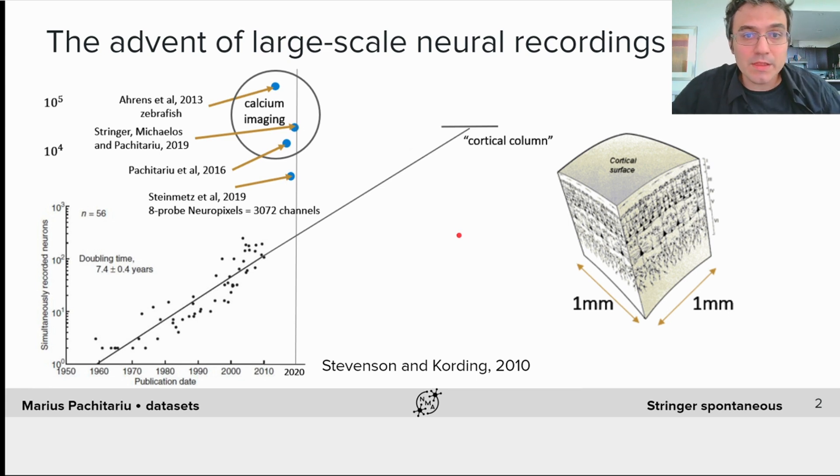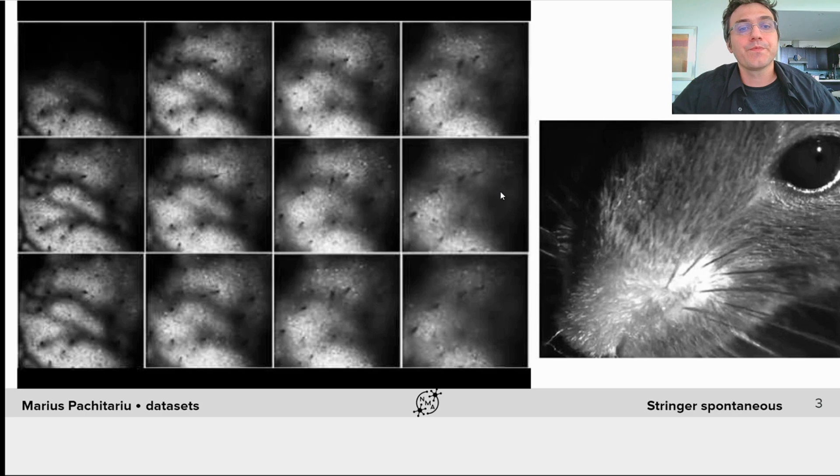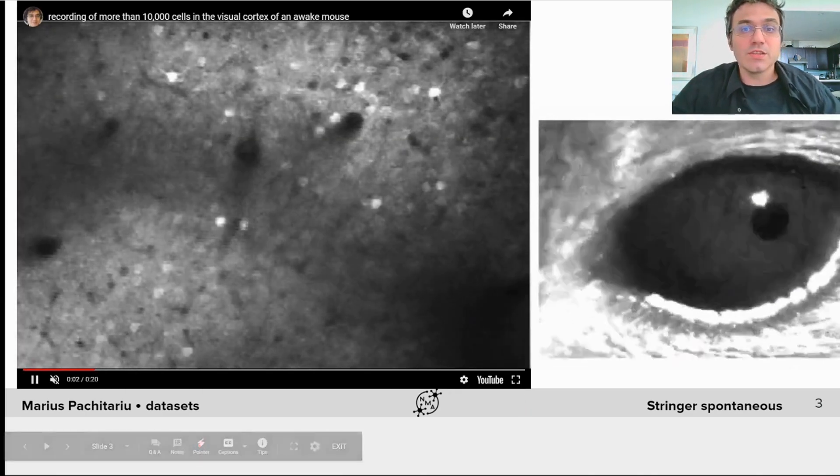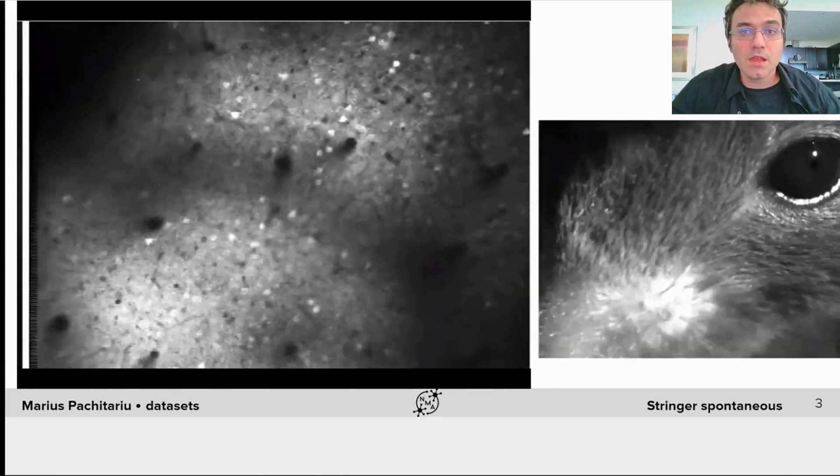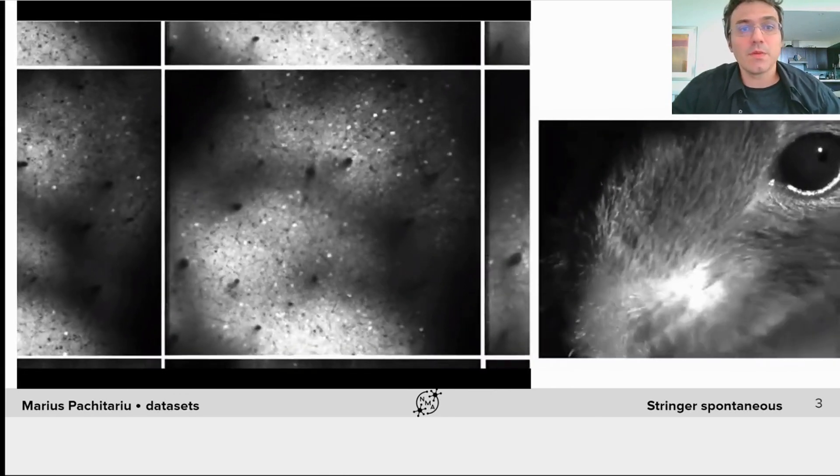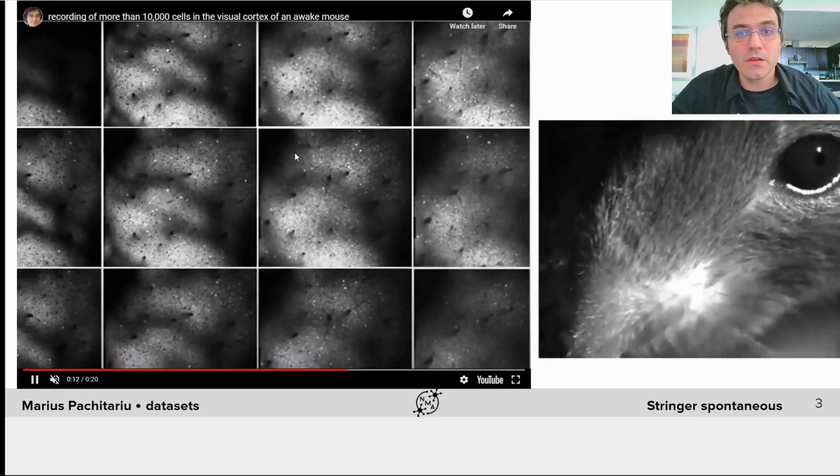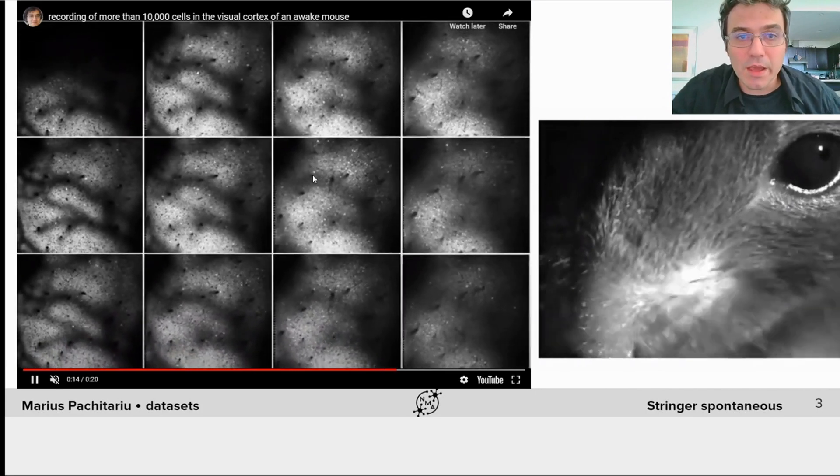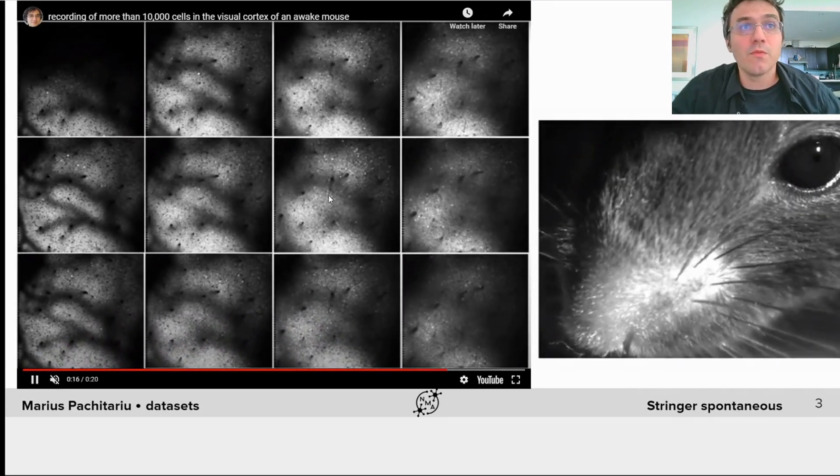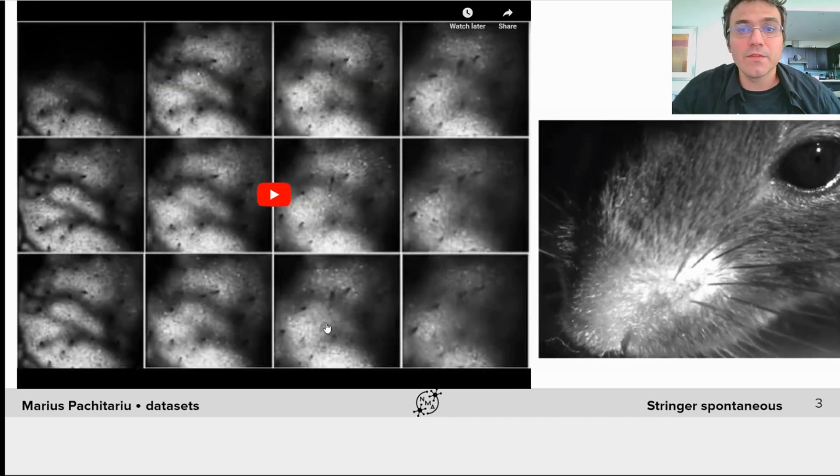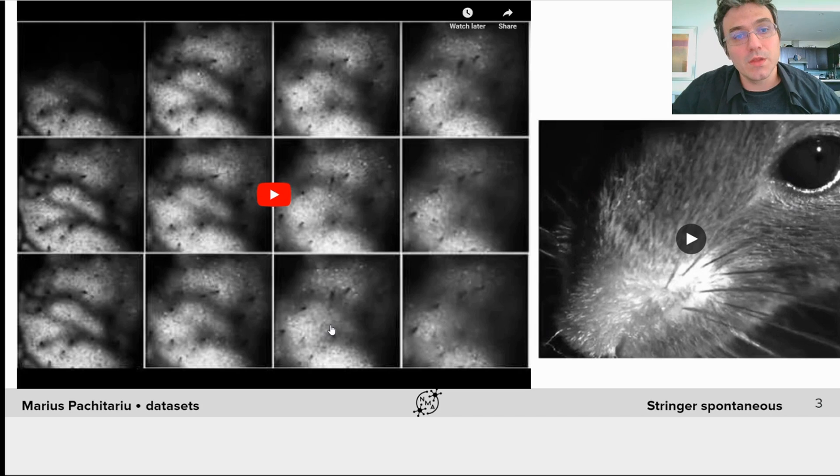The main technologies allowing this are calcium imaging and Neuropixels probes. Here I am describing the calcium imaging data. The nice thing about calcium imaging is that I can just show you the data as a video. The field of view in this case is about 1 by 1 millimeter horizontally, and you can see multiple planes corresponding to different depths of imaging, from very superficial in layers 2, 3, all the way to the top of layer 5, about 500 microns below the brain surface.